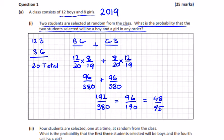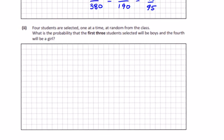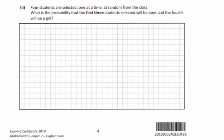Second part: four students are selected one at a time at random. What is the probability that the first three, so it's a specific thing happening here, the first three will be boys and the fourth will be a girl? Boy, boy, boy, girl.